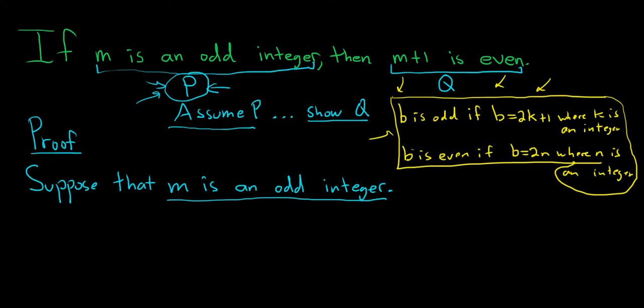In this case m is an odd integer. Let's write down what that means. This means that m is equal to 2k plus 1 where k is an integer.